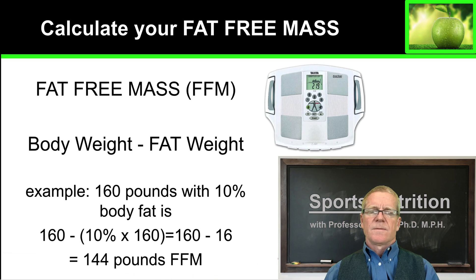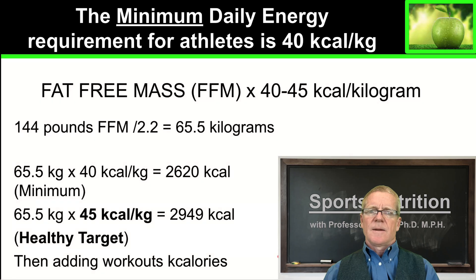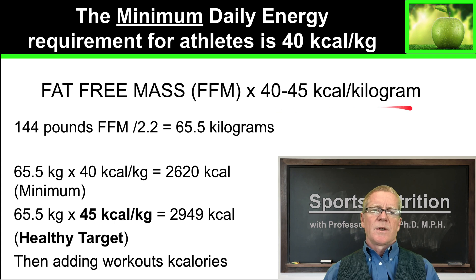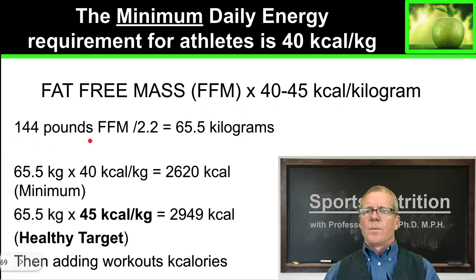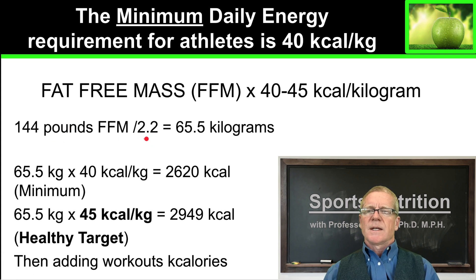Now let's take that 144 pounds of fat-free mass and look at how many kilocalories I need each day. Athletes require 40 to 45 kilocalories per kilogram of fat-free mass. 40 is the absolute minimum, and your target should be 45 kilocalories per kilogram of fat-free mass. We know I have 144 pounds of fat-free mass — 160 pounds minus 16 pounds of fat. Dividing 144 by 2.2, the conversion factor to get kilograms, my fat-free mass is 65.5 kilograms.